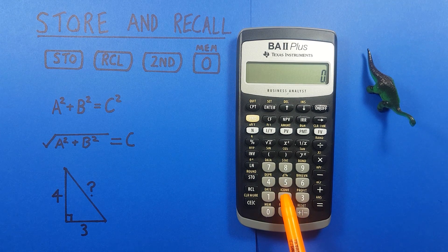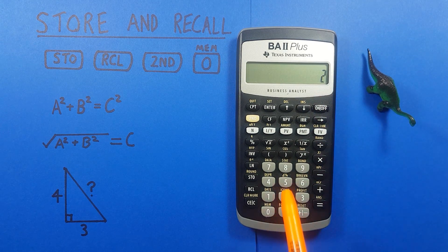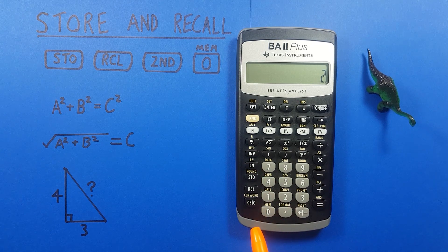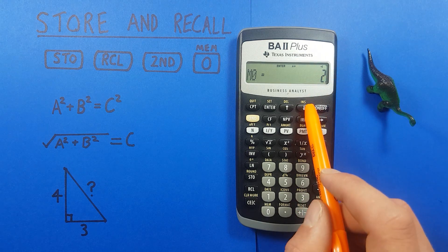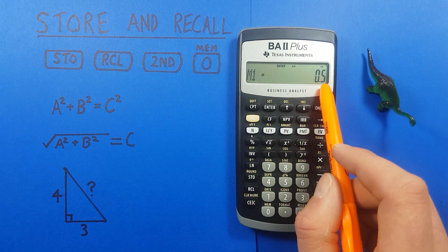You can just enter a new number in there, let's say 2, store 0. And if we check our memory again, we see memory slot 0 is 2. But we still have our 0.5 in memory slot 1.